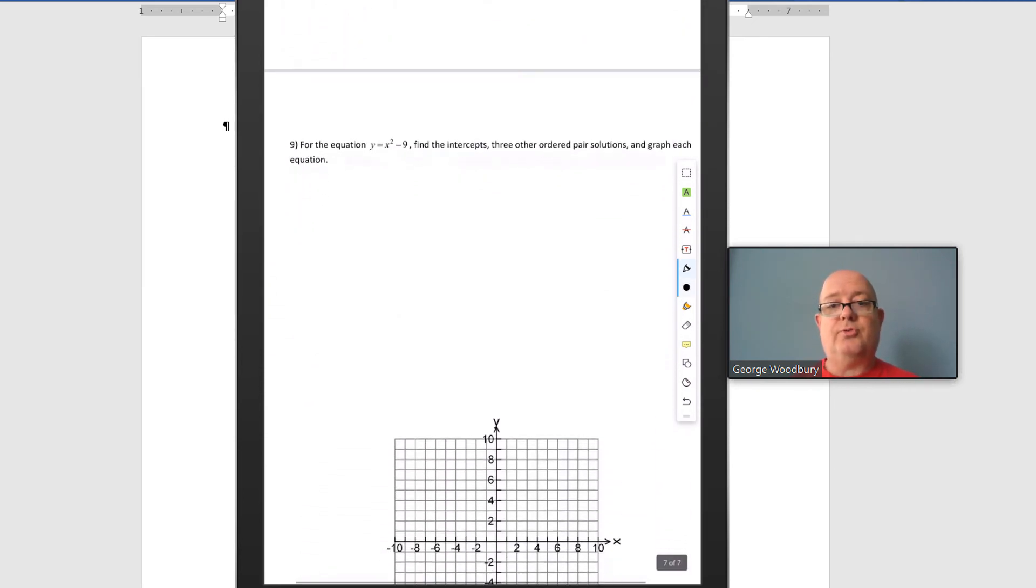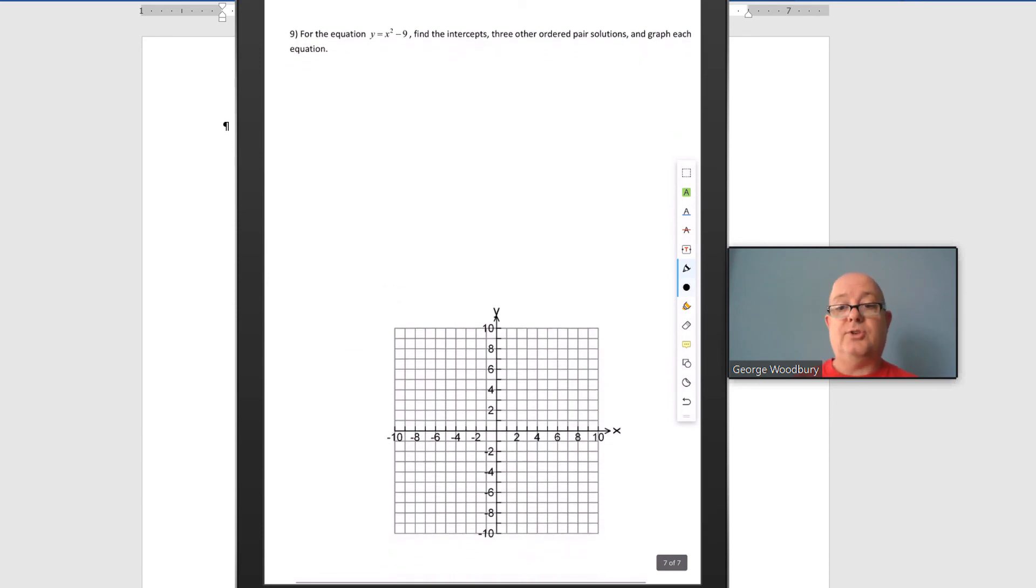This one's going to be a little more straightforward because now we have an equation of y in terms of x instead of x in terms of y. That's kind of backwards for the way we normally think of things, but it doesn't mean that we have to keep thinking of them that way. Let's find the intercepts first for y equals x squared minus 9.